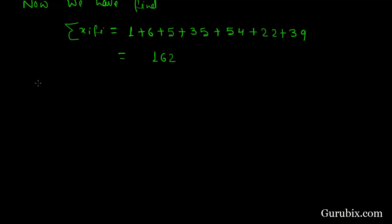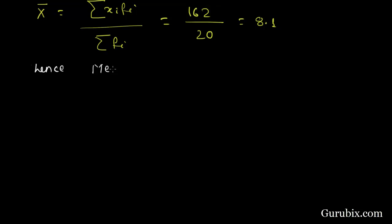Now, we know that x bar is equal to summation of xi fi upon summation of fi, which is equal to 162 upon 20, which is equal to 8.1. Hence, mean of number of plants per house is 8.1.